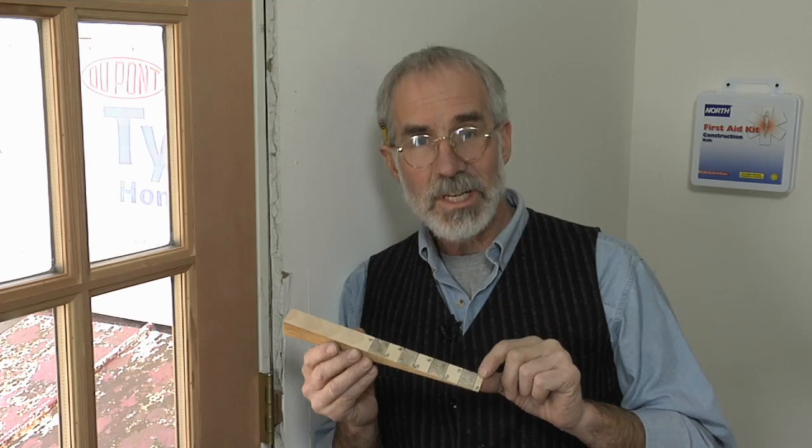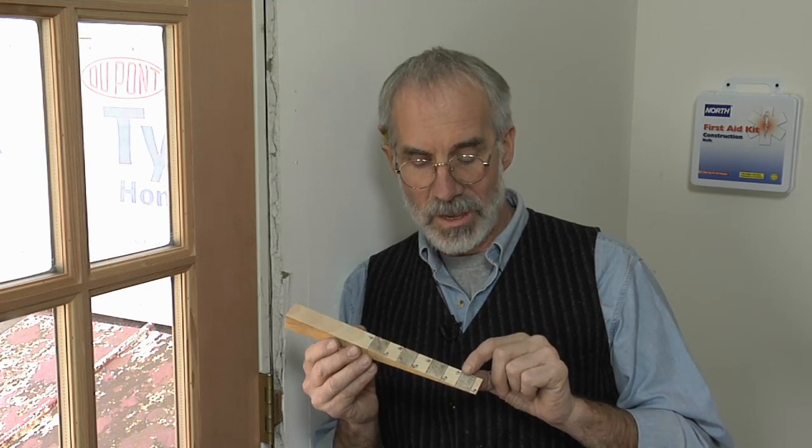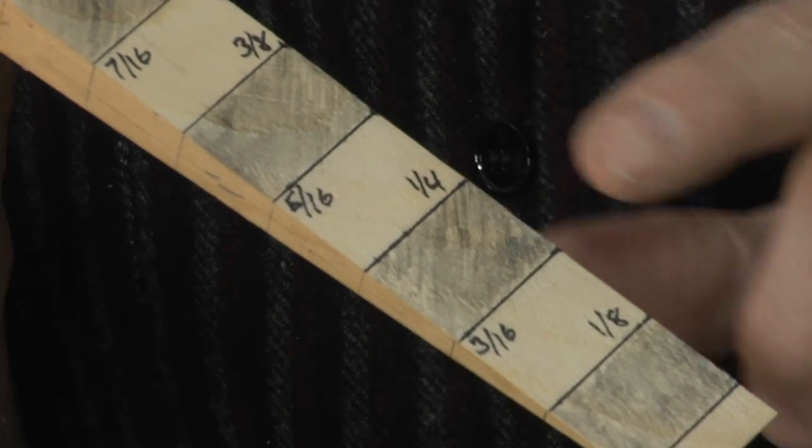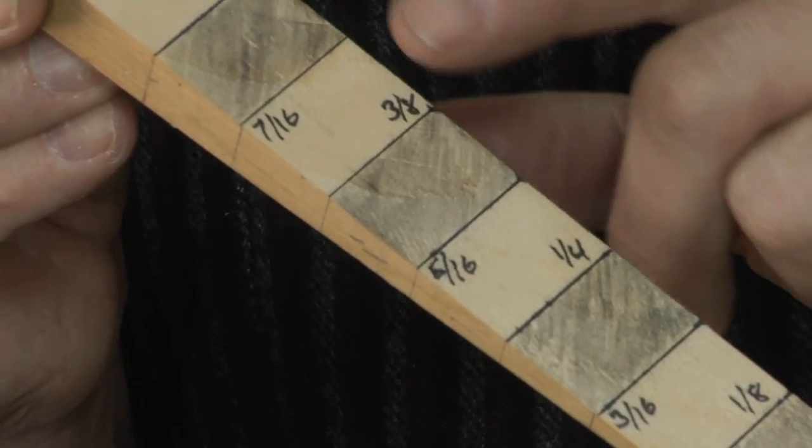The thicknesses are marked out in sixteenth-inch increments—sixteenths, eighths, three-eighths, quarter-inch—with a little shading every other space to help keep things straight.